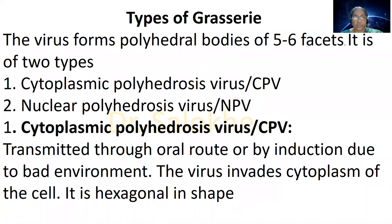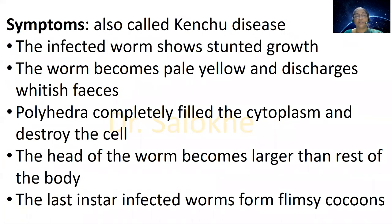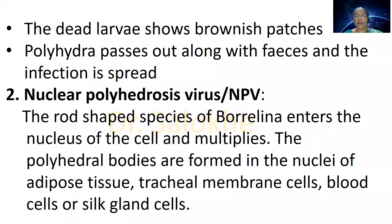Types of grassary: the virus forms polyhedral bodies of five to six facets. It is of two types: Cytoplasmic Polyhedrosis Virus (CPV) and Nuclear Polyhedrosis Virus (NPV). CPV is transmitted through oral route or by induction due to bad environment. The virus invades the cytoplasm of the cell and is hexagonal in shape. CPV is also called Kenchu disease. The infected worm shows stunted growth, becomes pale yellow, and discharges whitish feces. Polyhedra completely fill the cytoplasm and destroy the cell. The head of the worm becomes larger than the rest of the body. Last instar infected worms form flimsy cocoons. The dead larvae show brownish patches, and polyhedra pass out along with feces, spreading the infection.